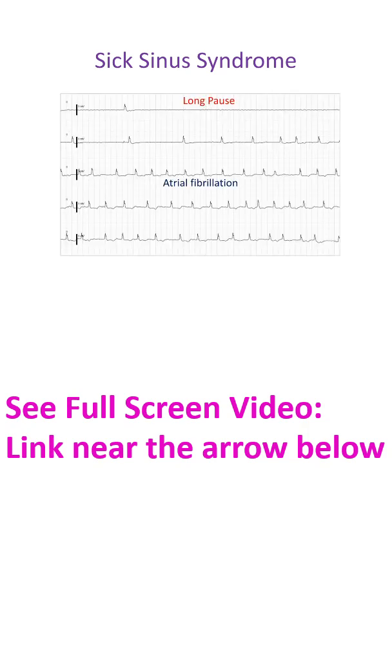If AV node is also defective, a long pause in the heartbeats can occur and the person can faint.